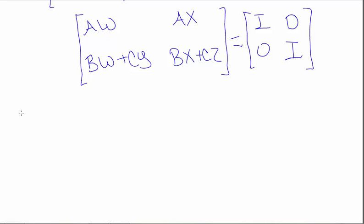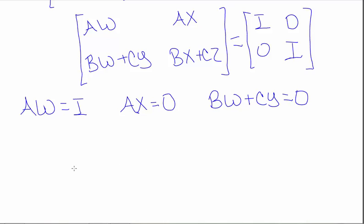So at this point, I have four different equations. AW is equal to the identity. AX is equal to 0. BW plus CY equal to 0. And the last one, BX plus CZ equal to the identity.